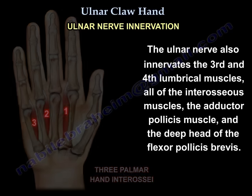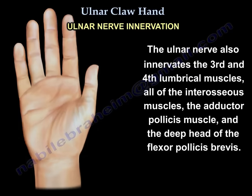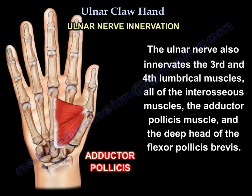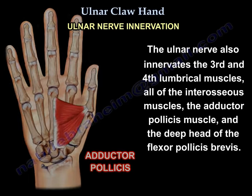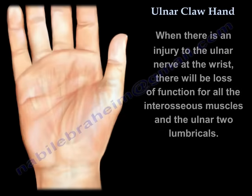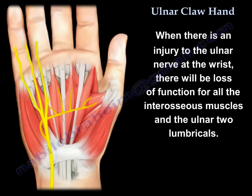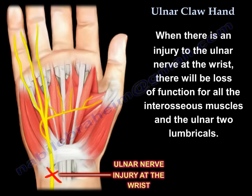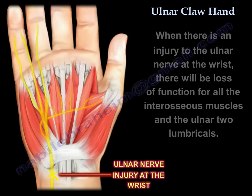In addition, it innervates the abductor pollicis muscle and the deep head of the flexor pollicis brevis. Injury of the ulnar nerve at the wrist will lead to loss of function of all the interossei muscles and the ulnar two lumbricals.